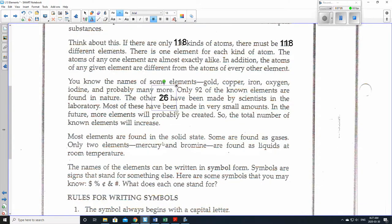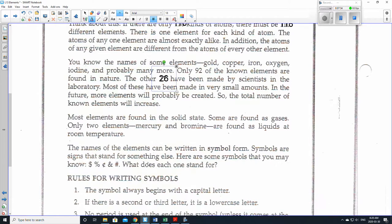Most elements are found in solid state. Some are found as gases. Only two elements, mercury and bromine, everyone say mercury and everyone say bromine, are found as liquids at room temperature. And tomorrow I'm also going to give you a periodic table in our lesson. That way you can look up these, and it even has a little legend that tells you which ones are gases and which ones are elements.